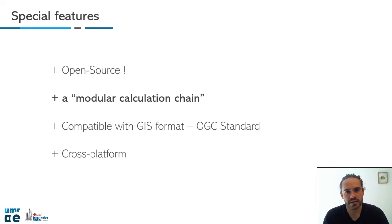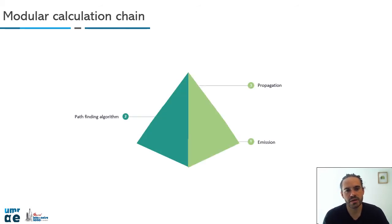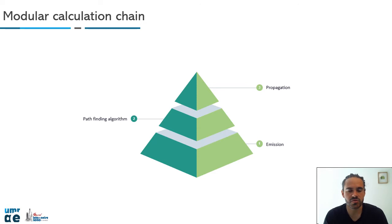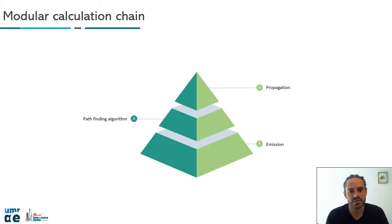I mentioned the modular calculation chain. Typically when you do a noise modelization, you press start and it does the emissions, the path-finding algorithm, and the propagation part all together. But in the CNOSSOS EU model, you can separate these three parts. You can keep the result of the path-finding algorithm on your hard drive — SSD drives are now really fast. After, you can compute many noise maps for different propagation parameters like temperature and relative humidity. Since the path-finding algorithm is the most time-costly step, you only do it once and then change input parameters for emission and propagation.